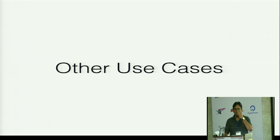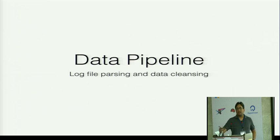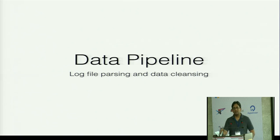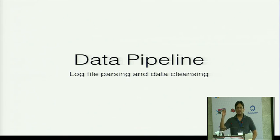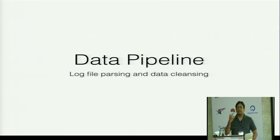There are other use cases for AWS Lambdas beyond HTTP. One is data pipeline. Customers give us millions of data records per day and we need to process them and find useful information. The first step to data processing is always data cleansing. Amazon has CloudWatch which puts log files into S3 buckets. You can set a trigger so whenever a file is created or updated in an S3 bucket at a particular directory, it automatically calls a Lambda function to run all your data cleansing algorithms.